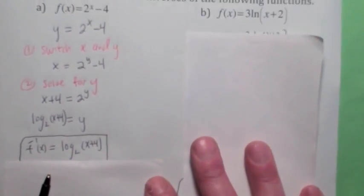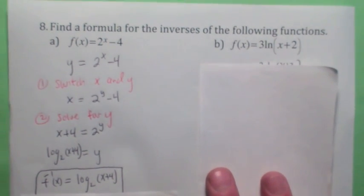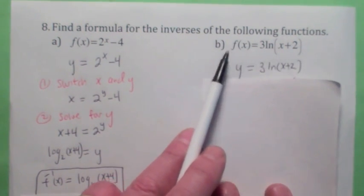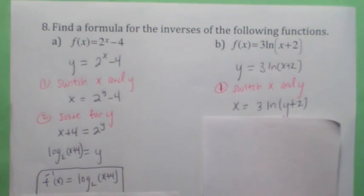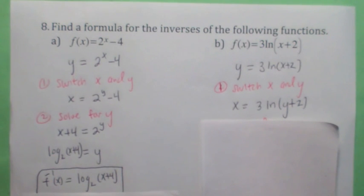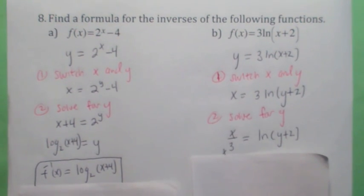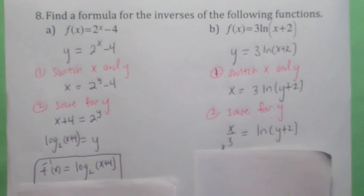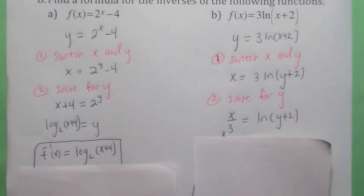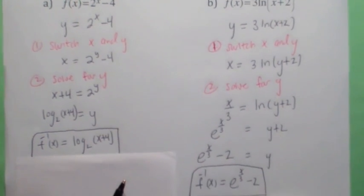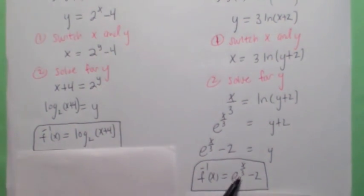For this one, let y equal 3 ln of x plus 2, then switch x and y to get x equals 3 ln of y plus 2. We can't use the definition of logarithm yet — first divide by 3. Now rewrite the log equation as an exponential equation: y plus 2 equals e to the x over 3. Subtract 2, and f inverse of x equals e to the x over 3 minus 2.